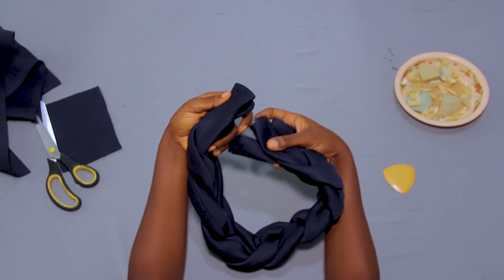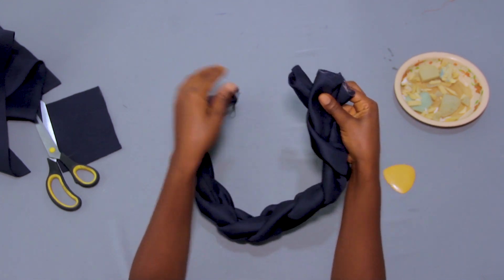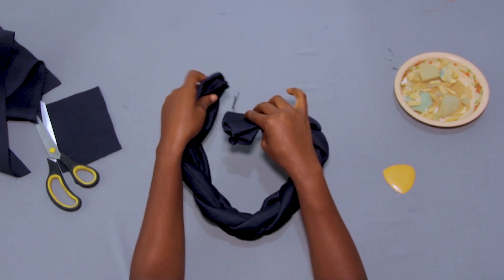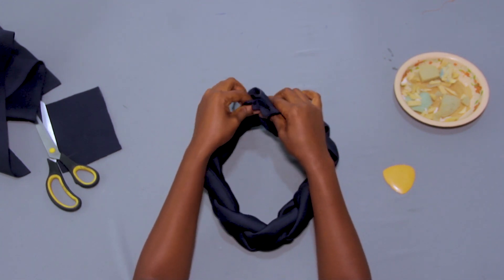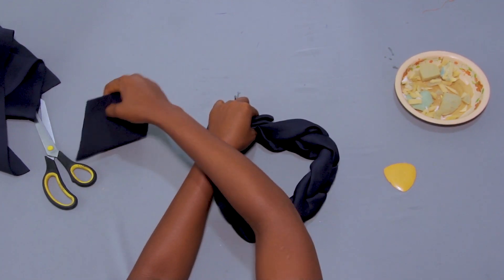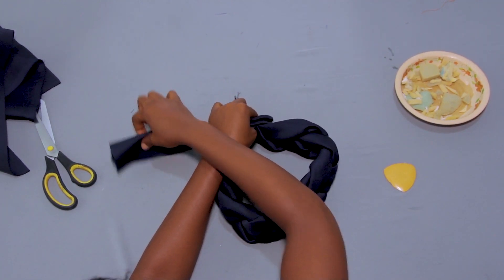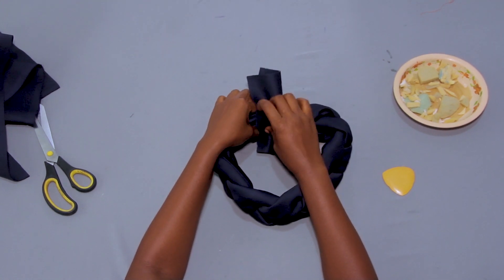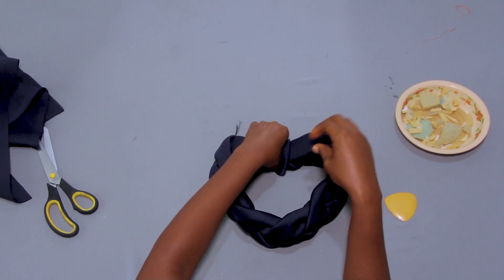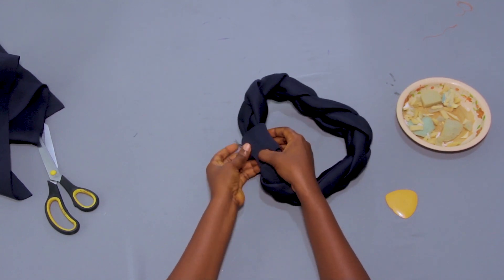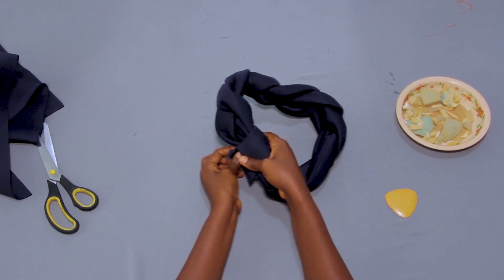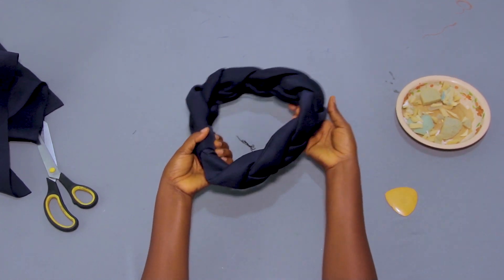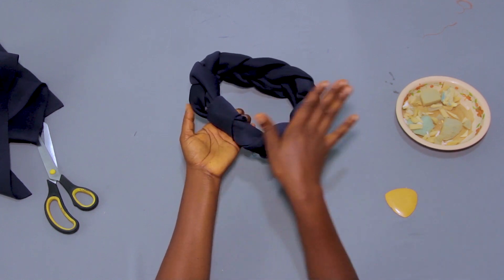This is what we have. We are going to tuck these three together. After that, we will join them together, and then we will cover the back with the other piece. This will be our final one. I'm going to sew it.